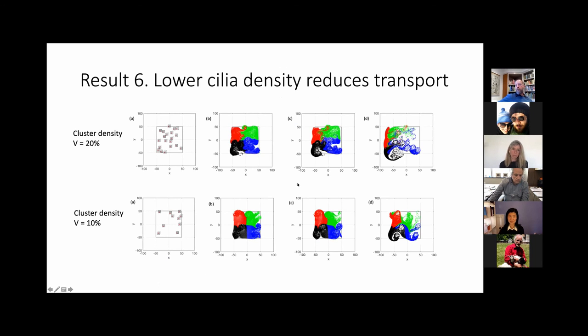The last picture is with different density. This is the 20% density of these clusters at a large tissue scale, 100 by 100 microns. You can see a lot of effective transport versus at half of the density, very little transport.